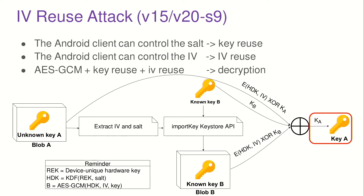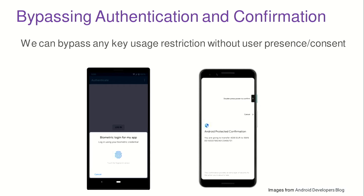This is very useful for an attacker. It's interesting because when you generate a key you can also require TrustZone to enforce specific conditions for using it — for example, a signature key that requires fingerprint verification before signing a transaction. Even if the device is compromised, a secure prompt would ask 'do you want to sign this transaction?' and only proceed with the user's fingerprint. But if we can recover the key, we don't need the user anymore — we can simply take all the money.